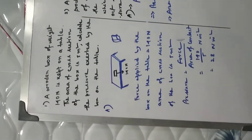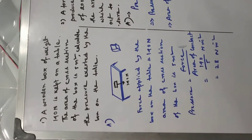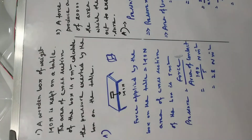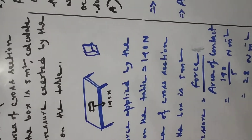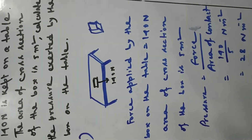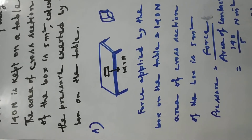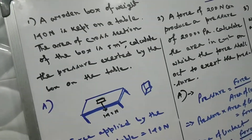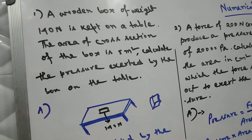In the first example, a wooden box of weight 140 Newton is kept on a table. The area of cross-section of the box is 5 meter square. Calculate the pressure exerted by the box on the table. Here is a box on the table and the box is applying 140 Newton force on the table due to its weight.